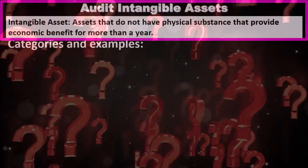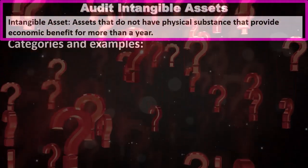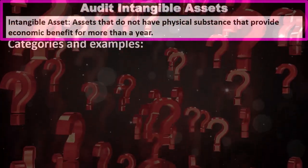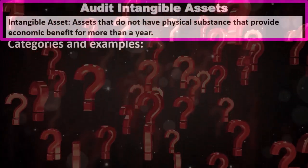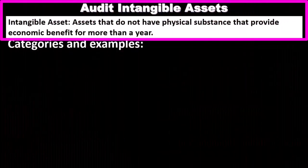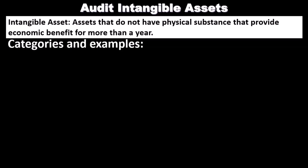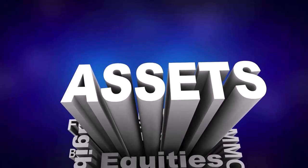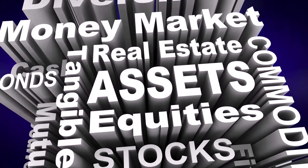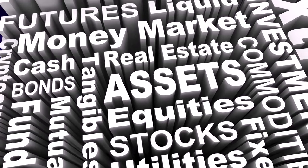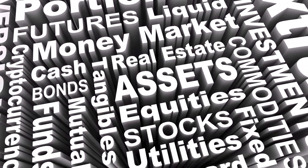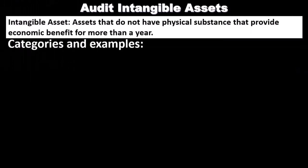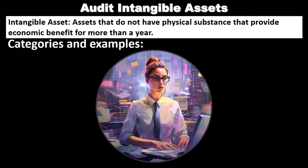We will define intangible assets. In other words, intangible assets are assets that do not have physical substance but provide economic benefit for more than a year. So we're thinking about types of assets — things that you can't touch, you can't kick, you can't feel. However, they do have value and they're going to be providing value for more than a year, and therefore they're assets we would expect to see on the financial statements, even though they don't have that physical substance.